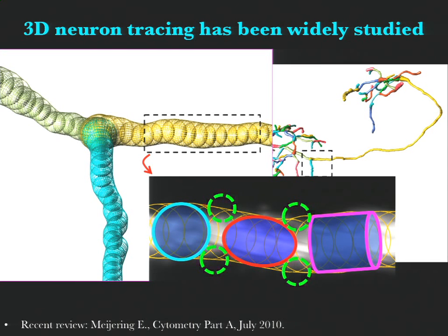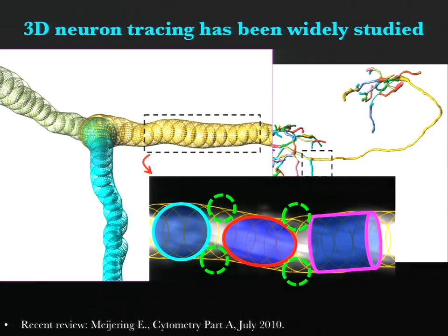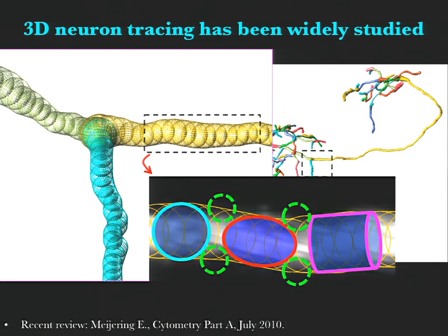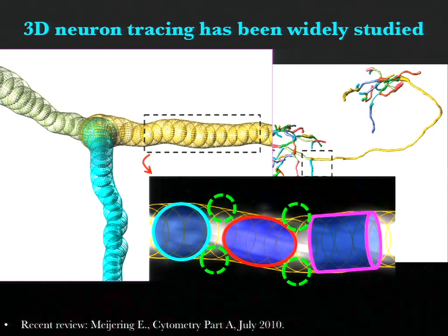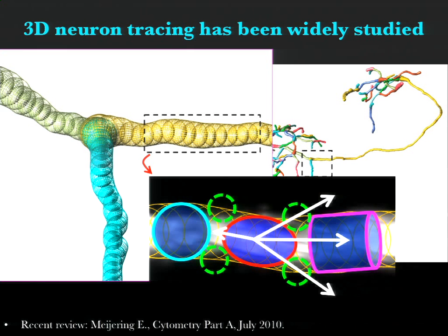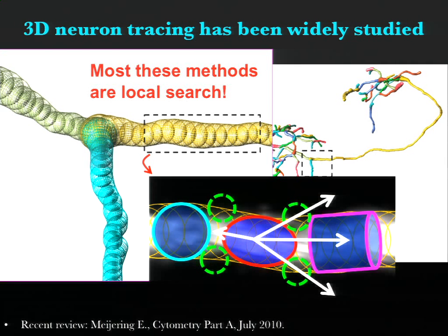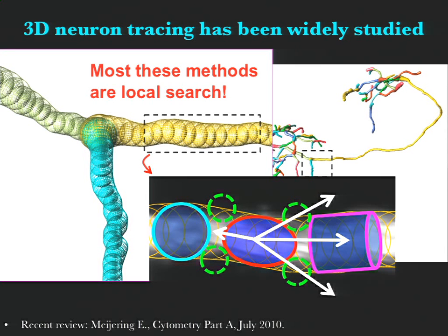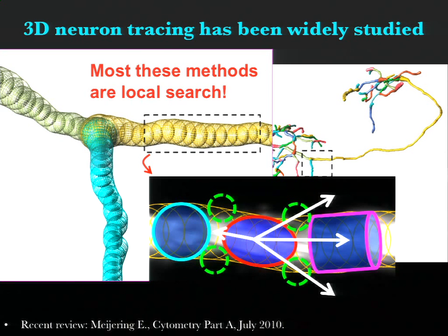One approach is to detect the edge of the neuron, and once you detect the edge, you can create a sphere. Then you can use a model. Another way is that you could run in different directions, and then estimate the structure. Most of these existing methods rely on local search — you need to have a structure, and then, based on that, infer the other structure.